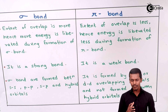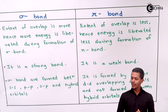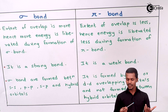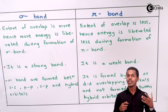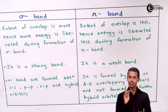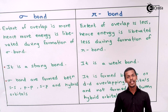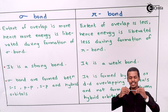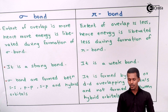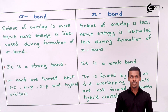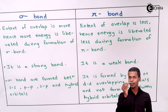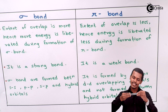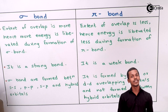Another difference: when a sigma bond is formed, the groups attached to it can be easily rotated, because there is only one axis involved — free rotation is possible around a sigma bond. But in the case of a pi bond, since one bond is sigma and one is pi together, rotation is not possible. That is the last difference between sigma and pi bonds.